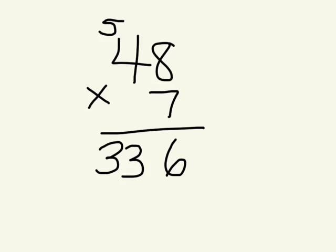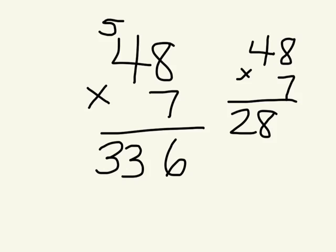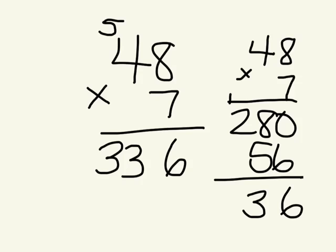If we looked at this in partial products, it would be 40 times 7 is 280. 8 times 7 is 56. And you would get the same answer.